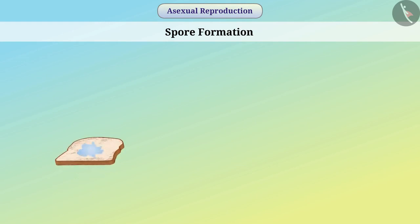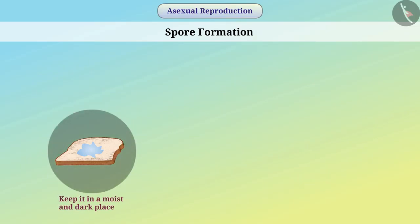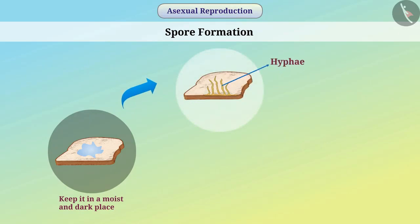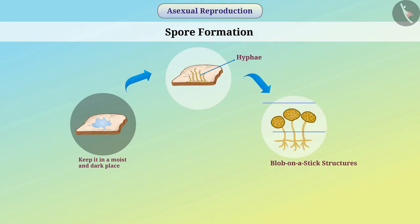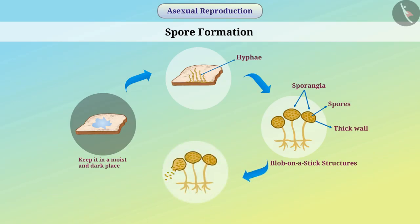Spore formation. If you take a piece of bread, soak it in water, and keep it in a moist and dark place, within one or two days you will see some thread-like structures developing on it. This is the hyphae of rhizopus. If you observe the vertical fibers with a microscope, you will see blob-on-a-stick structures called sporangia. Special cells called spores are found in these. A thick wall protects the spores, and under favourable conditions this wall breaks and spores spread. At appropriate temperatures and humidity, these spores begin to grow and form new fungus. This method of reproduction is known as spore formation.